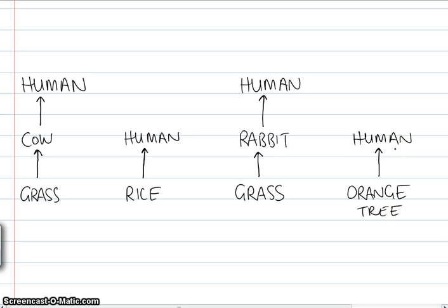So, these are what we call food chains. Each one is a different food chain. But it's a bit, it's unnecessary to have five different food chains. What we could do is just combine those.